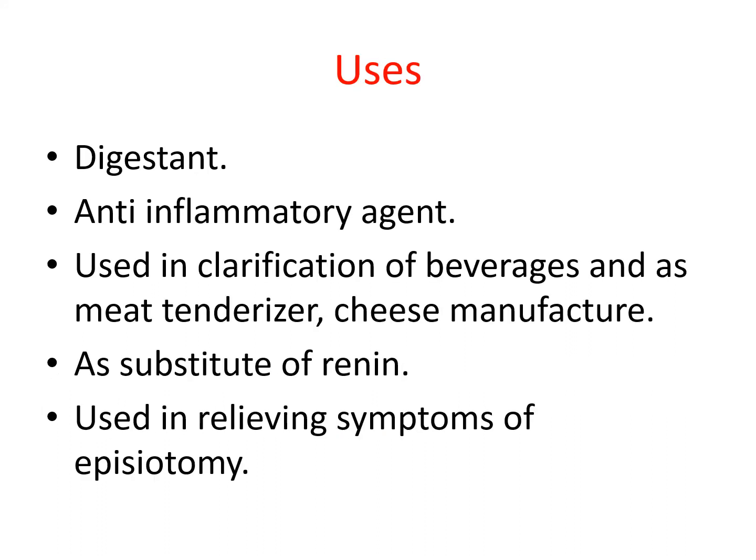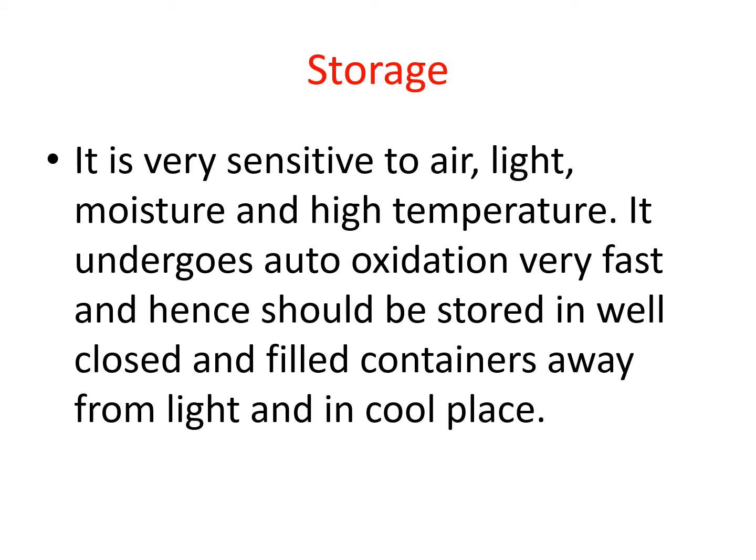The uses of papaya: it is a famous digestant, anti-inflammatory agent, used in clarification of beverages and as a meat tenderizer, in cheese manufacturing, and it is also used as a substitute of rennin, and in relieving the symptoms of episiotomy. Regarding storage conditions for papain: it is very sensitive to air, light, moisture, and high temperature. It undergoes auto-oxidation very fast and hence should be stored in a well-closed and well-filled container, away from light and in a cool place.